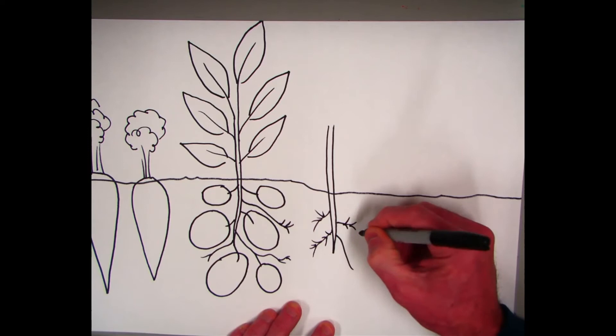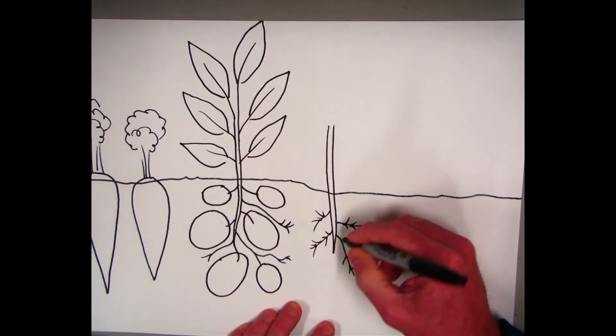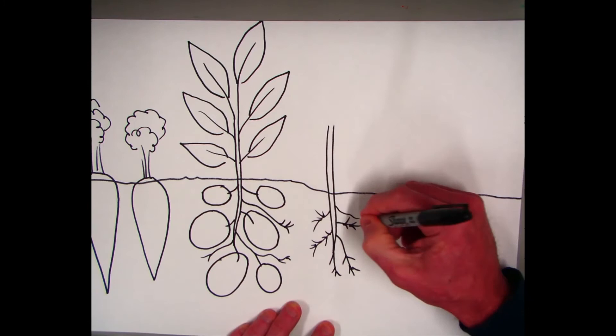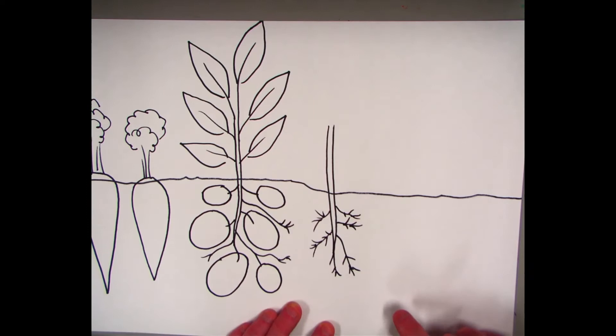corn, garlic, pumpkins. You can make it how you want. Now, you can see I'm adding all kinds of little roots coming off of my tomato plant.